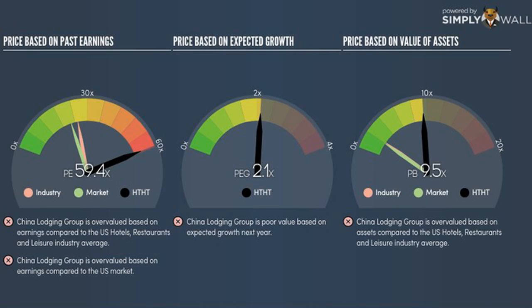For example, if you accidentally compared lower growth firms with HTHT, then HTHT's PE would naturally be higher since investors would reward HTHT's higher growth with a higher price.